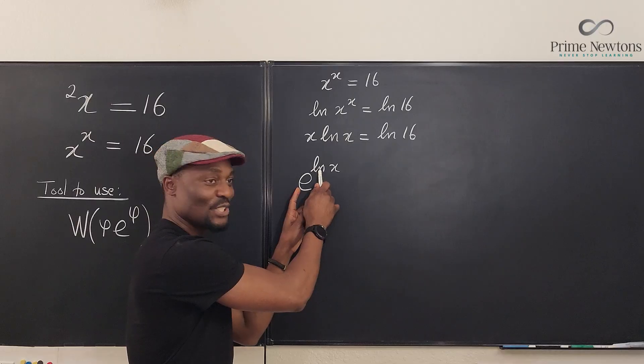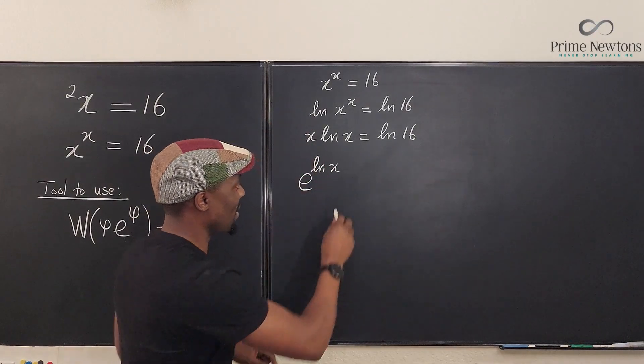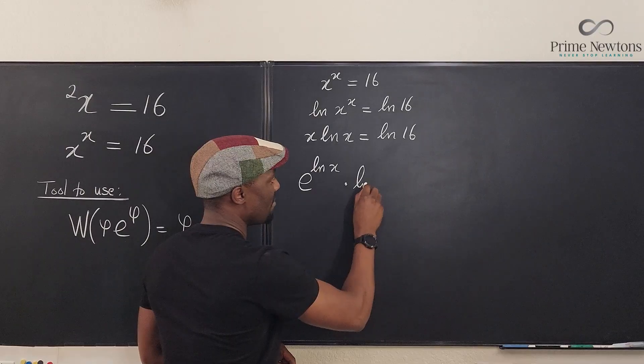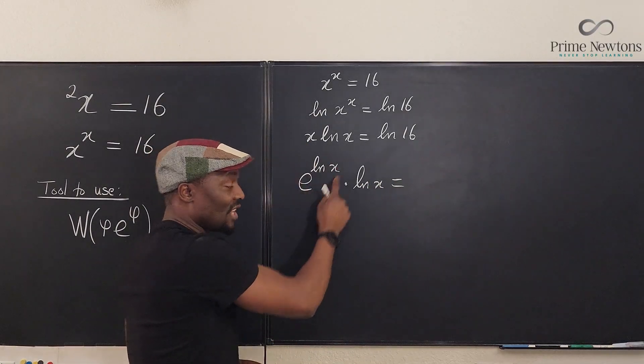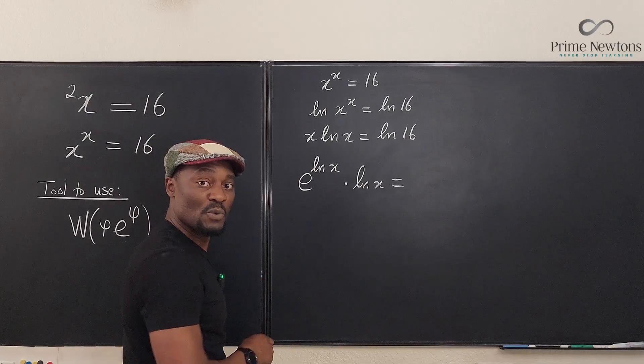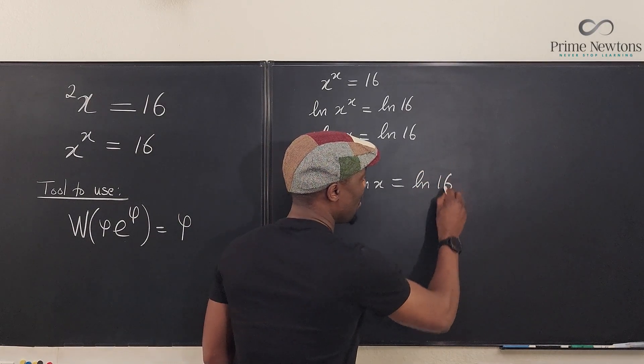Because this always undoes this and you're gonna get your x back. So this x has been written this way, so we're multiplying it by the natural log of x. We haven't changed anything, we just changed the form in which we wrote this. So this is going to be equal to the natural log of 16.